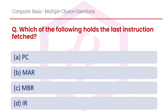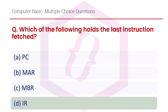Which of the following holds the last instruction? Option A PC, option B MAR, option C MBR, option D IR. The right answer is option D, IR.